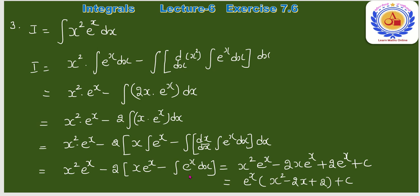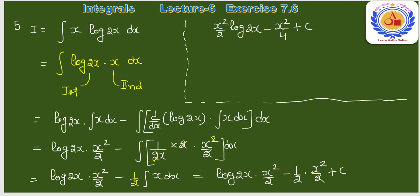Simplify करने पर: x²·e^x − 2(x·e^x − e^x) + C = e^x·(x² − 2x + 2) + C। यही question number 3 का final answer है।